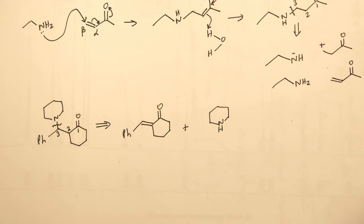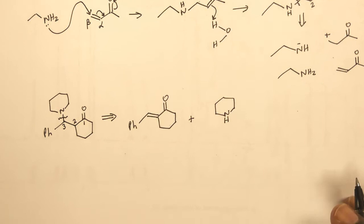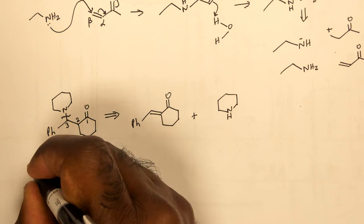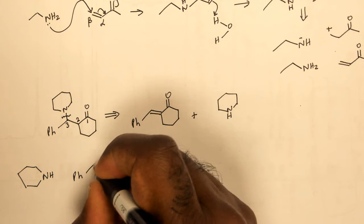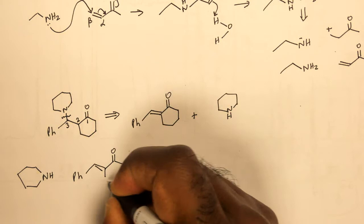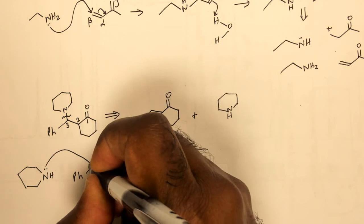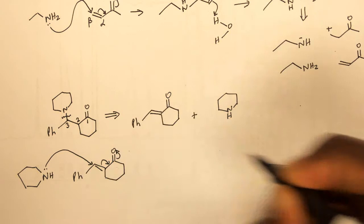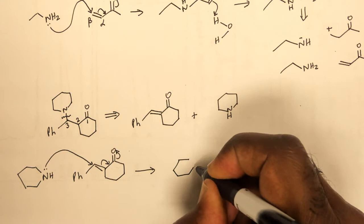If I look at the typical synthesis of this, I would probably add a nucleophile to the Michael acceptor. And the reaction would occur by a nucleophilic attack on the beta carbon, electrons flowing toward oxygen again.